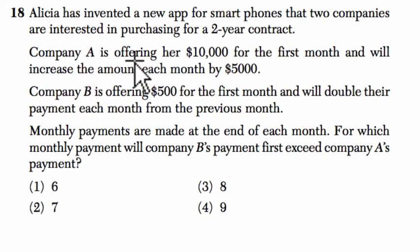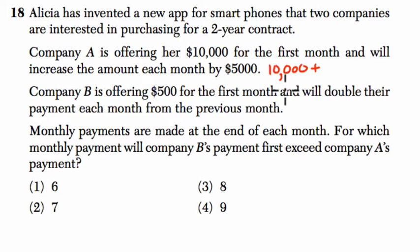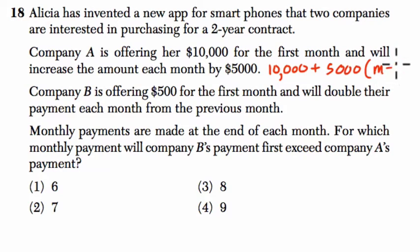Here are our two offers. Company A is offering her $10,000 for the first month and will increase the amount each month by $5,000. So that tells me we're going to start with $10,000 as our first payment — that's our starting point. And then each month after that, the payment is going to increase by $5,000. So it's $10,000 for the first month, and then for the second month it's going to be 5,000 times (m minus 1). So this is our equation for after the first month.